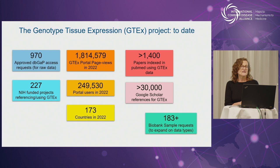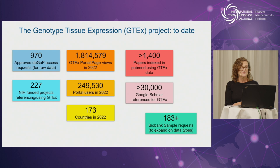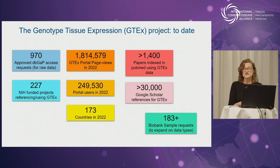By all accounts, this has been an incredibly successful project. There are close to 1,000 approved access requests for the raw data, and there are 227 NIH-funded projects at present that either use or reference the data. Even more people use the derived data available on the portal — we had 1.8 million page views last year from close to 250,000 separate users spanning 173 countries. There were over 1,400 papers indexed in PubMed using GTEx data, 30,000 Google Scholar references, and at least 183 requests to use the biobank samples.